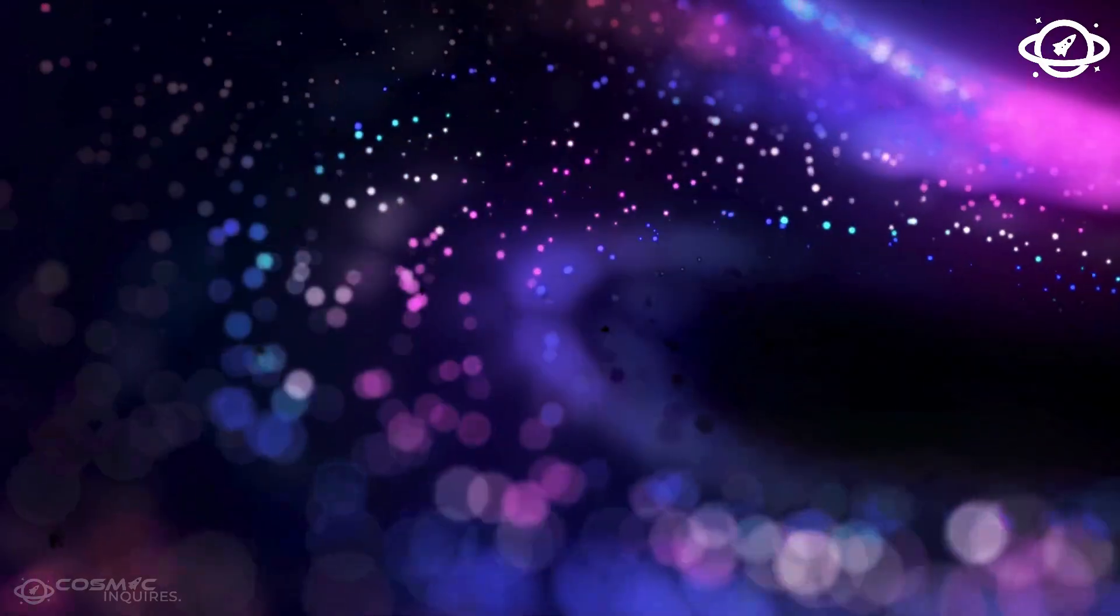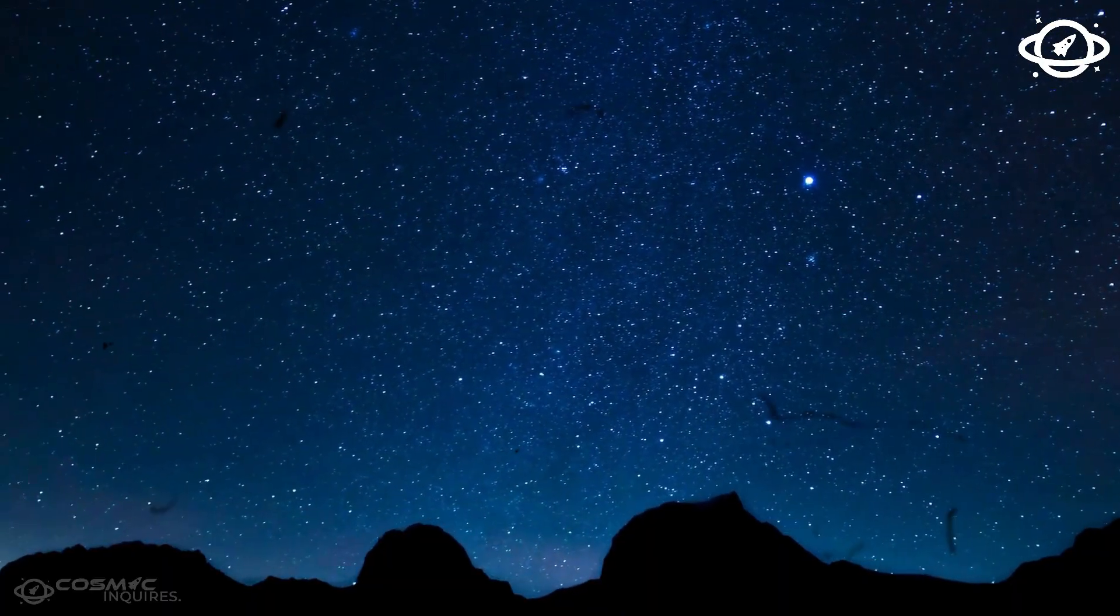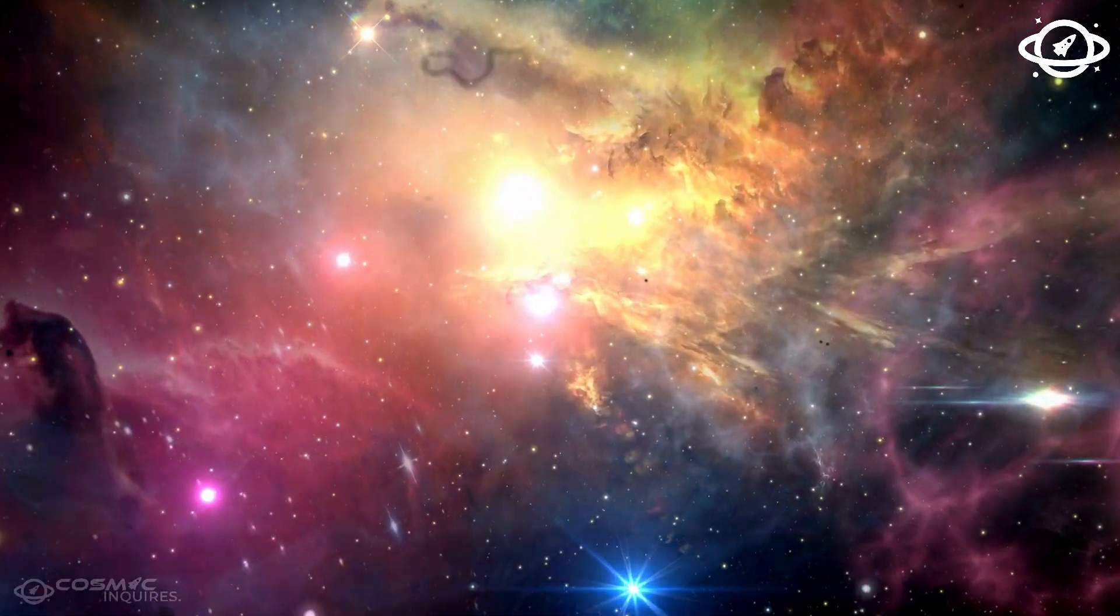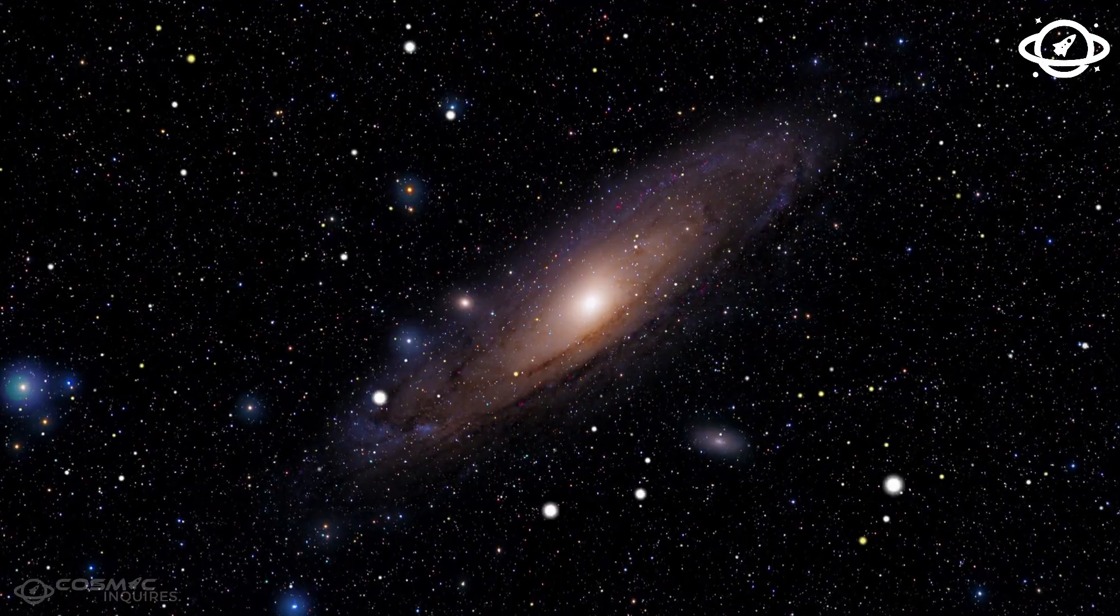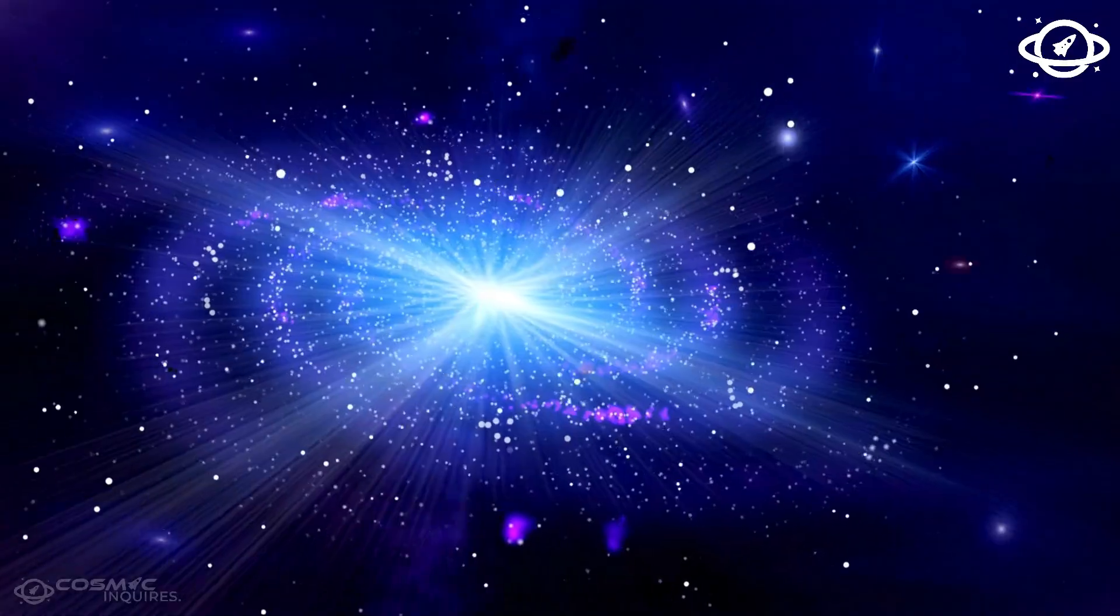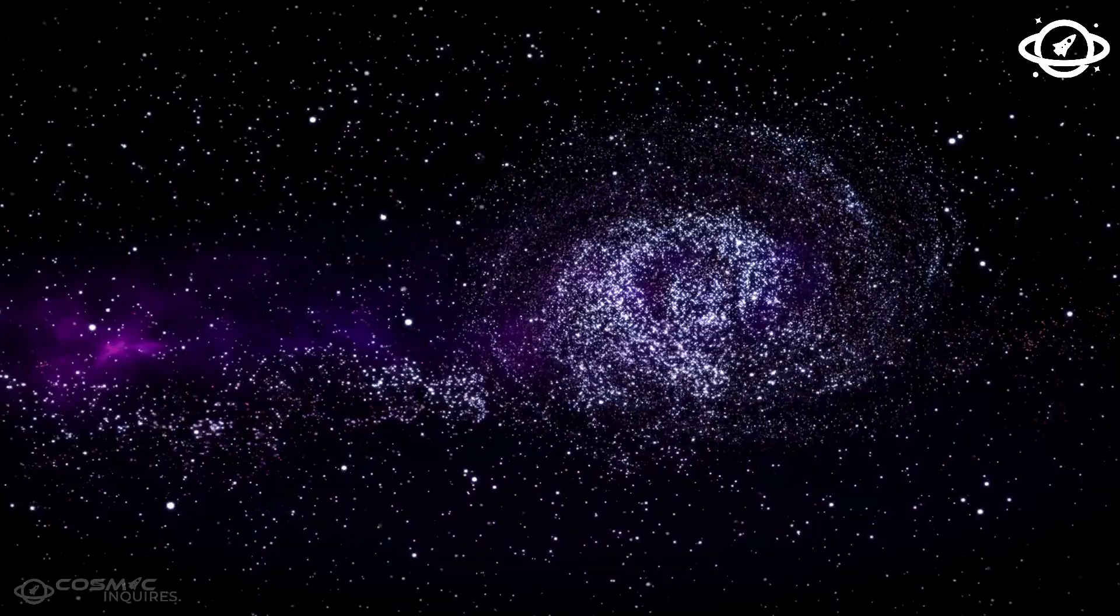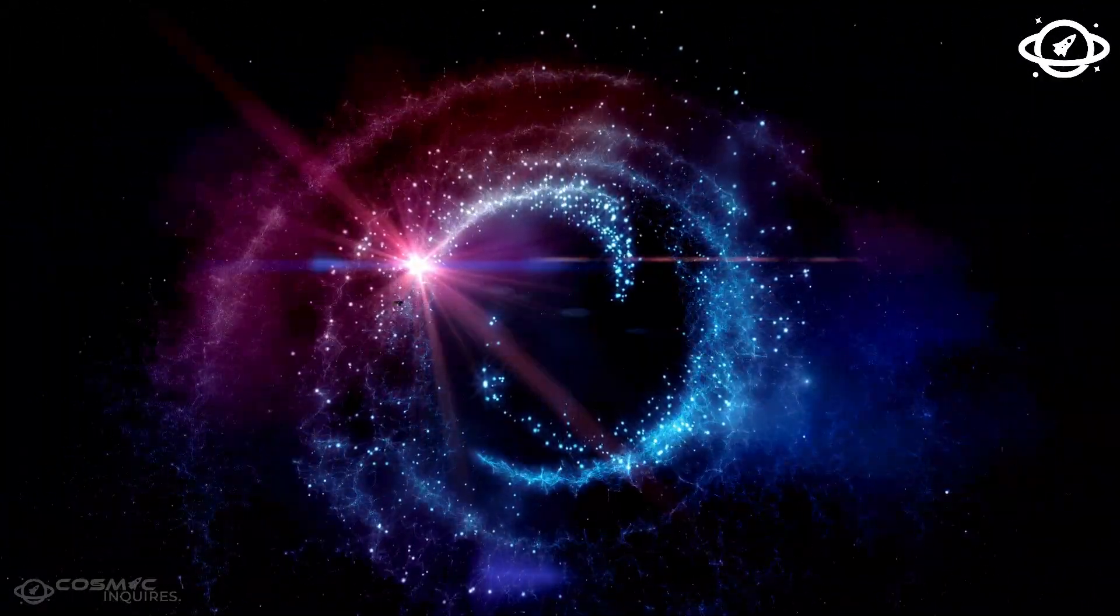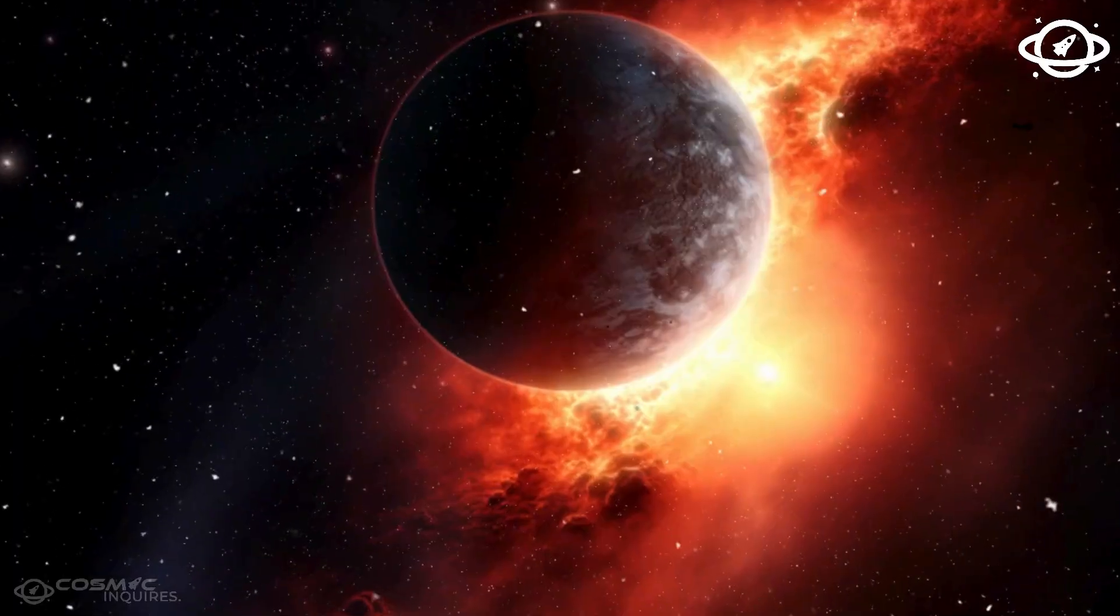If Neptune is more than a planet, if it's a vessel or a mechanism or a monument to physics we haven't yet earned, then that means the solar system isn't just a natural structure. It's a map, a sequence, a set of instructions written in orbit, and gravity, and temperature. And now that we've read one of the final lines, we're beginning to understand the message. But that message may not be reassuring. Because what if Neptune wasn't hiding a secret? What if Neptune is the secret? And what we just saw was the lock turning.